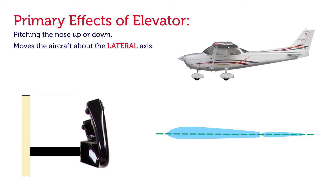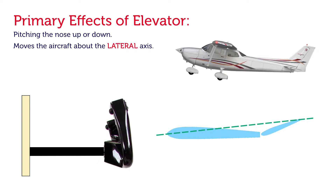If we apply back pressure or pull back on the control column, the elevator deflects upward. On that aerofoil we've changed the trailing edge, which changes the camber — increasing the curvature of the aerofoil — and when we increase the camber we generate more lift. We've also changed the chord line, creating a larger angle, which produces more lift. That lift then pushes the elevator and tail plane down, causing the nose of the aircraft to pitch up.